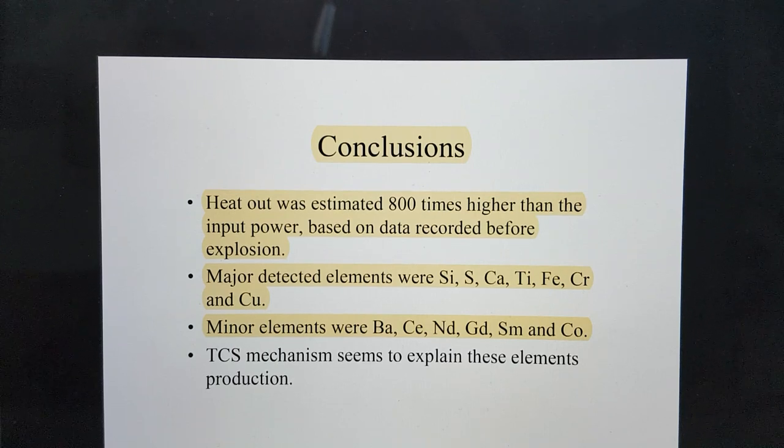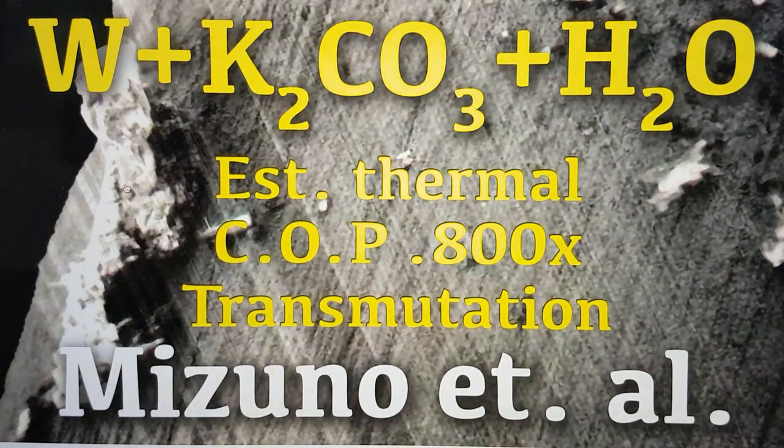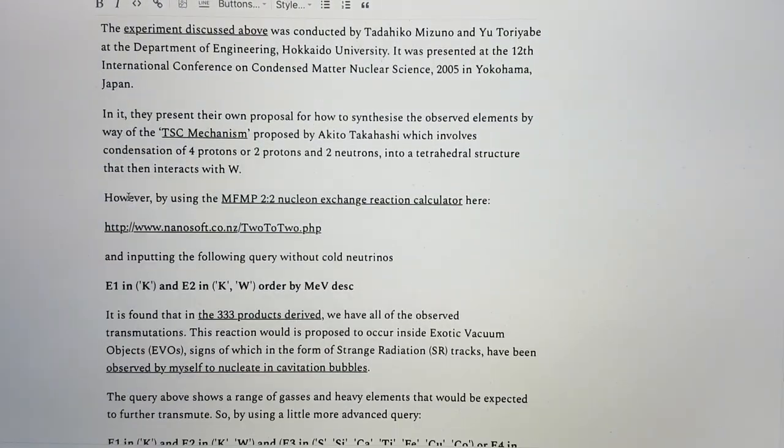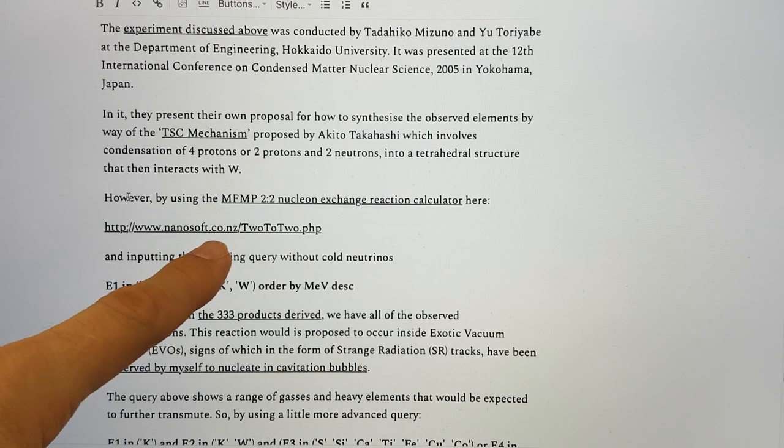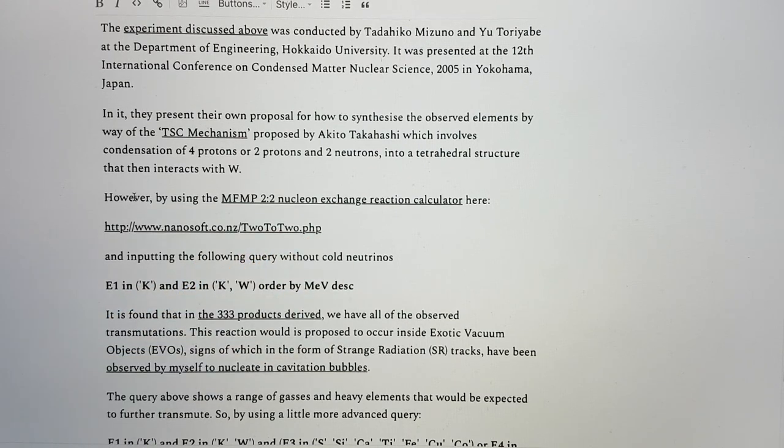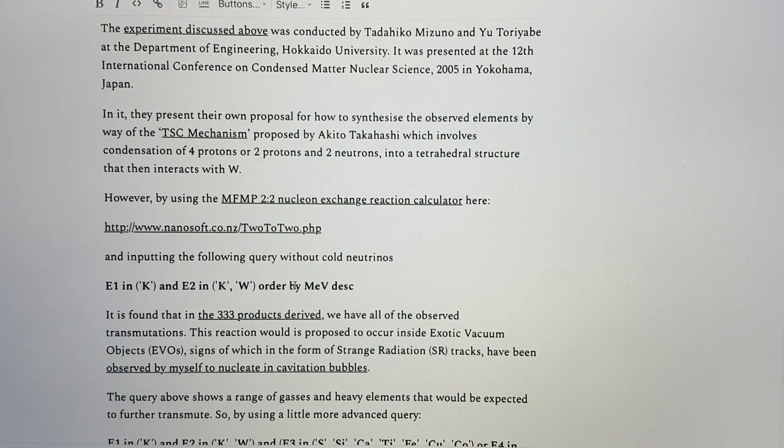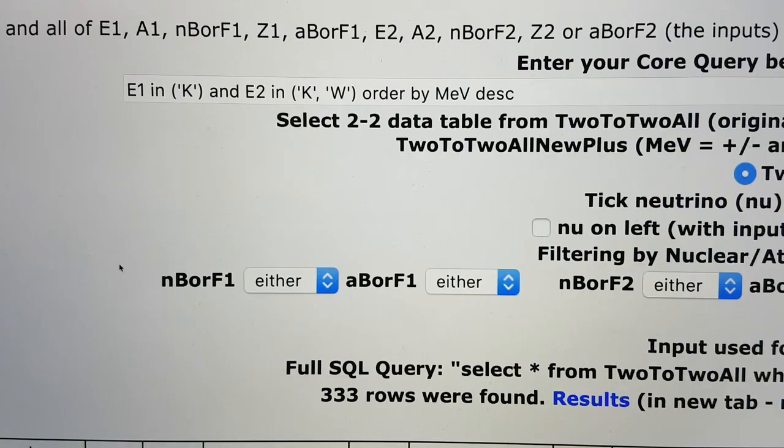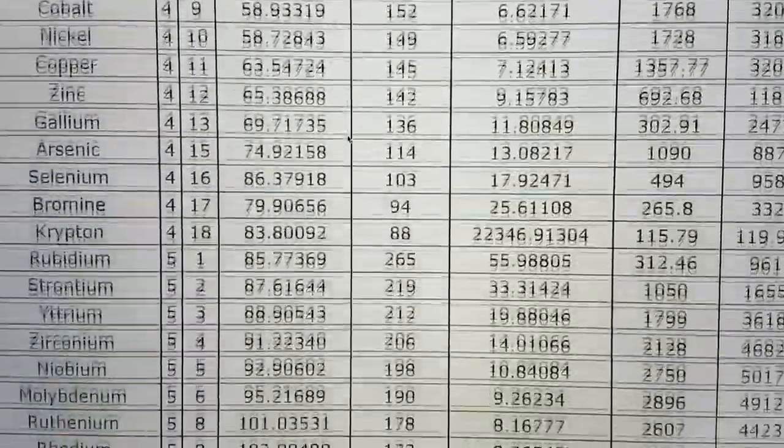We can say that is plausible given the data from the same kind of input energies in the Adamenko et al experiments and output energies where they claim to have observed around 10,000 times more energy across all forms of transmutation and types of rays and particle emissions as well as thermal. The major detected elements were silicon, sulfur, calcium, titanium, iron, chromium, and copper. Minor elements were barium, cerium, neodymium, gadolinium, samarium, and cobalt. The TSC mechanism seems to be a suitable explanation for this. If we use the MFMP's Nucleon Exchange Reaction Calculator at nanosoft.co.nz, and we input potassium as element 1 and potassium and tungsten as element 2, you can see there are 333 outputs.